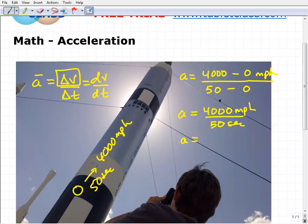Let's clean this up a little bit better. Our acceleration would be four thousand divided by 50. Let me get my little calculator here. That's 80. So that's 80 miles per hour per second.